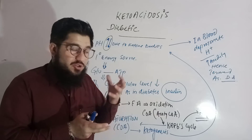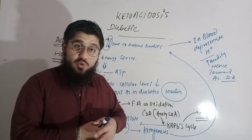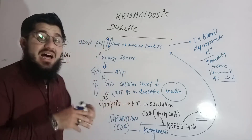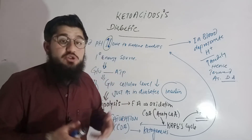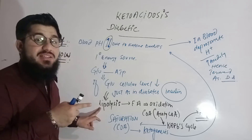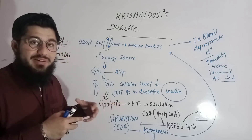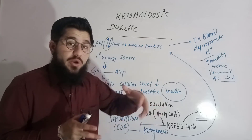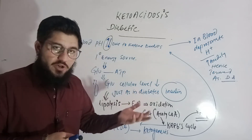Insulin is responsible for decreasing blood glucose level by moving glucose towards the cell. Now the cells are deficient of glucose — glucose is not moving inside the cell. So what will happen? Intracellularly, lipolysis will start. The fatty acids' metabolism will begin, and fatty acids will start undergoing the process of oxidation.